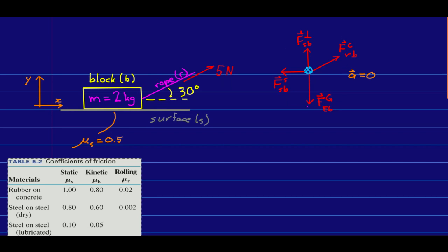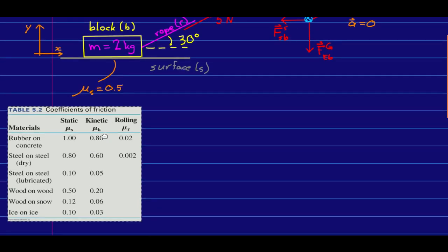So the free body diagram would look like this. Here's this force of static friction. And I'm going to say we know the coefficient of static friction. Note here's a table of coefficients of static friction. You can look these things up.